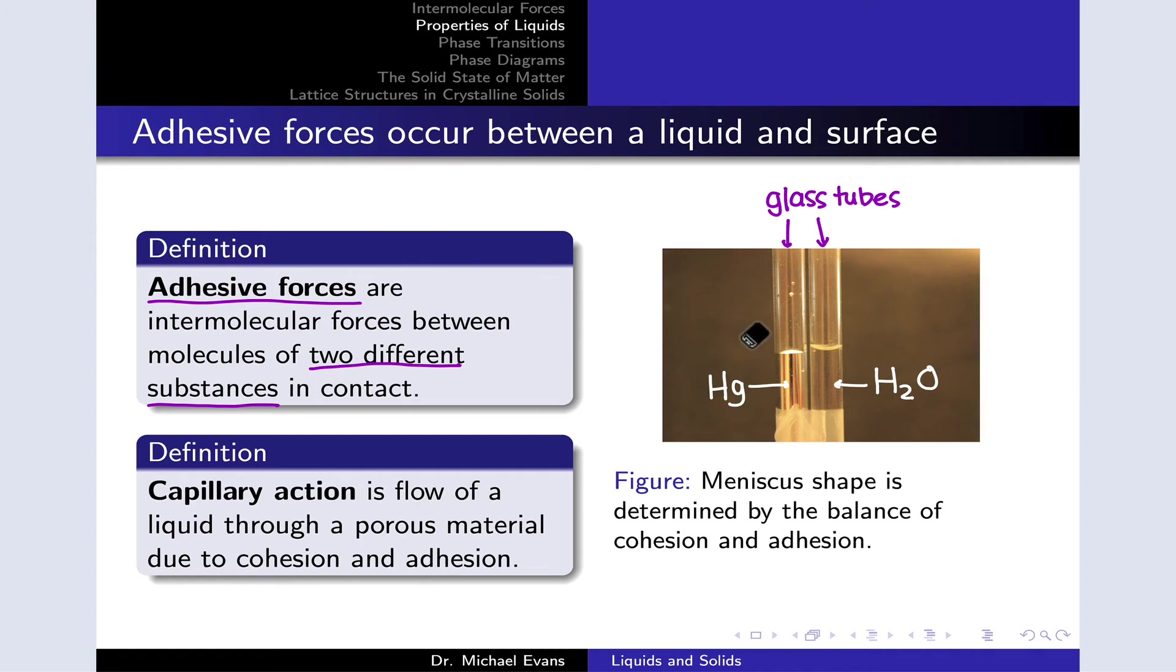Mercury is a metal, and it tends to bond more strongly to itself than the non-metal glass substance. So there's stronger cohesion within the mercury. This tends to cause the mercury to want to form a droplet-like surface, a spherical bulging meniscus like you see right here that bulges upward.